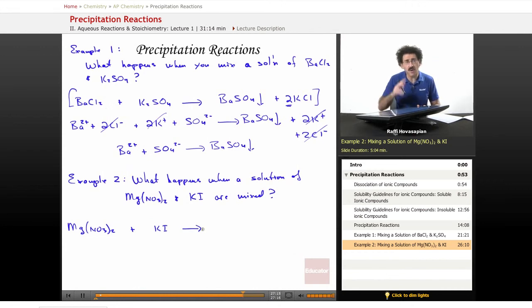We write the molecular formula by switching partners. Magnesium and iodide come together as MgI2, and potassium and nitrate come together as KNO3.